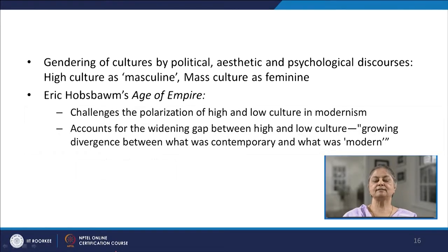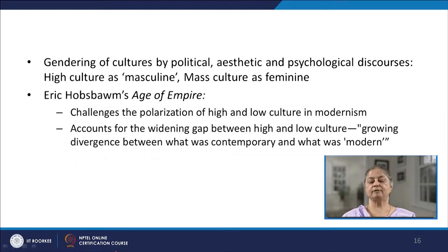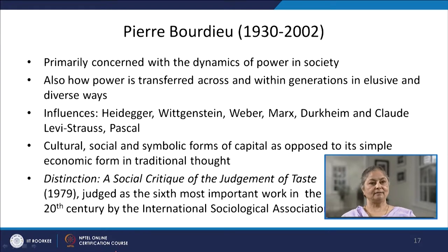Cultural demarcation is a problem of capitalist modernization and patriarchal structures. In different cultures, high culture is understood as masculine and mass culture as feminine. Eric Hobsbawm notes that the polarization of high and low culture in modernism had to be challenged later on, accounting for the widening gap as a growing divergence between what was contemporary and what was modern. A major philosopher who immediately comes to mind when talking about high and low culture and stratification is Pierre Bourdieu, who is primarily concerned with the dynamics of power in society and how power is transferred across and within generations in ways that are elusive and diverse.